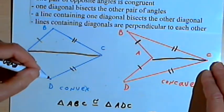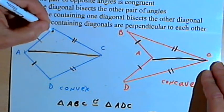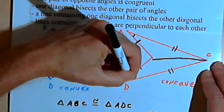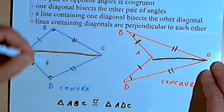That means the corresponding parts will be congruent. So angle B and angle D in both cases will be congruent angles. So we've got a pair of opposite angles that are congruent.